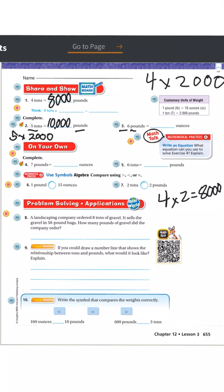Number three: six pounds is how many ounces? Looking at the conversion chart, one pound is 16 ounces. So six pounds is six times 16, which is 96 ounces.